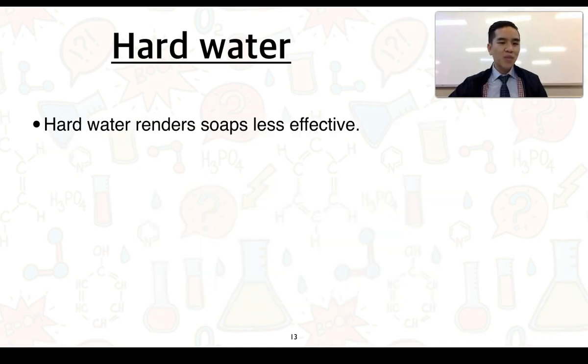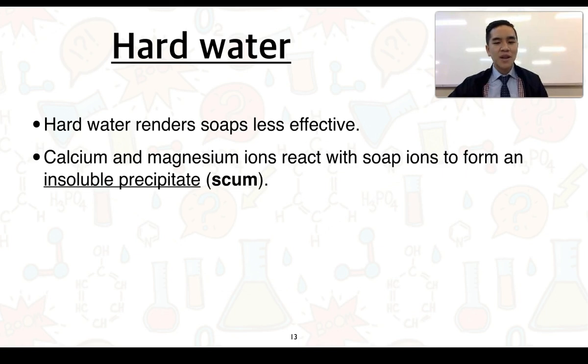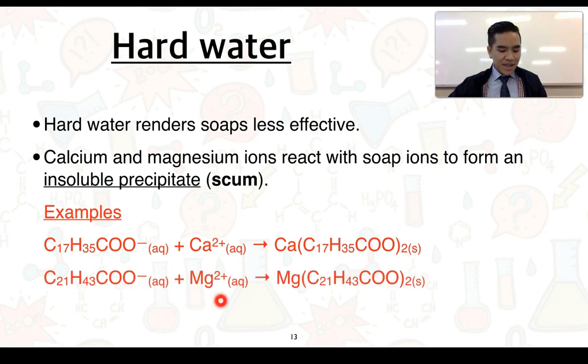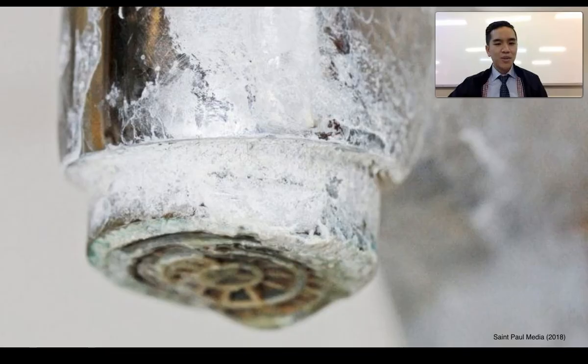One of the major problems of hard water is that it can render soaps less effective. We know this occurs because calcium and magnesium ions react with soap ions and they form an insoluble precipitate, which is what we call soap scum. Some examples of how these precipitates can form. And this does link into some work that we've done back in stage 1 chemistry. We can see here the formula of a soap ion. It can react with calcium ions and produce a solid salt or a precipitate. Magnesium, likewise, can do the same thing. So it doesn't really matter what your soap is, it's going to be able to form that precipitate there.